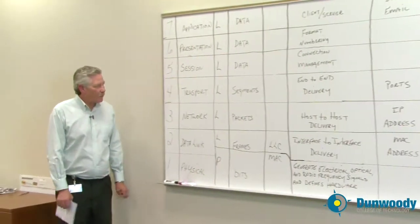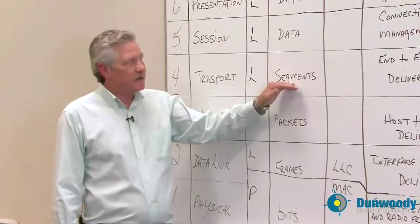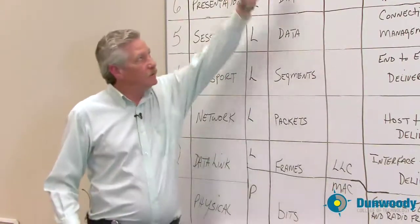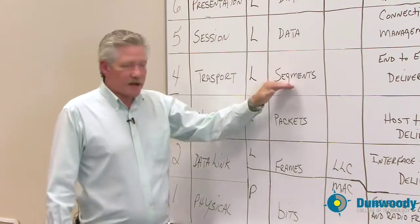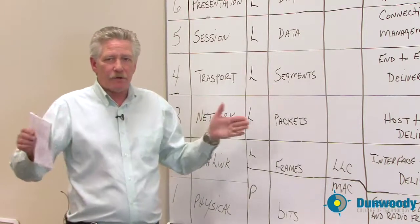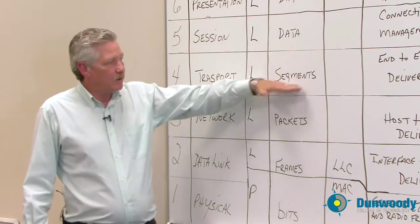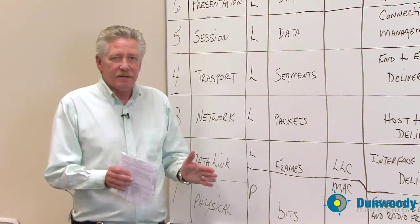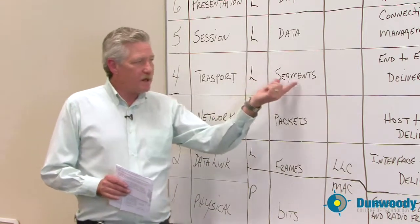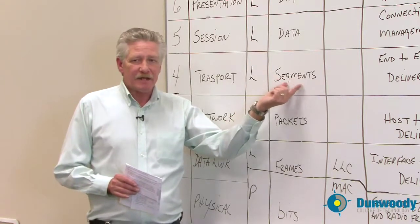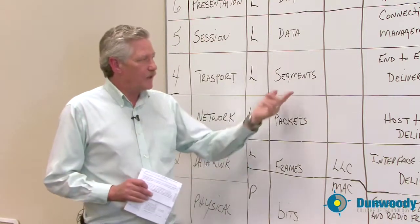Then at the transport layer, layer 4, once again, it's a logical layer. Here is where segmentation happens. Data coming down from the application layer can be very large. So at transport layer, it can only be up to a certain size of 1,492 bits. So at this point, it segments those packets down to that size or smaller. And what's special about TCP especially is it numbers the packets, so they can be put back in their sequential order.